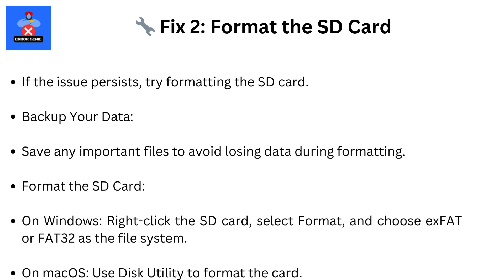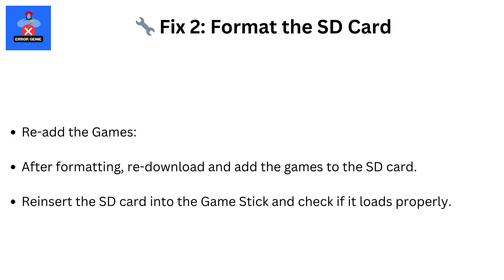Fix 2: Format the SD card. If the issue persists, try formatting the SD card. First, back up your data — save any important files to avoid losing data during formatting. On Windows, right-click the SD card, select Format, and choose exFAT or FAT32 as the file system. On macOS, use Disk Utility to format the card. After formatting, re-download and add the games to the SD card, then re-insert it into the GameStick and check if it loads properly.